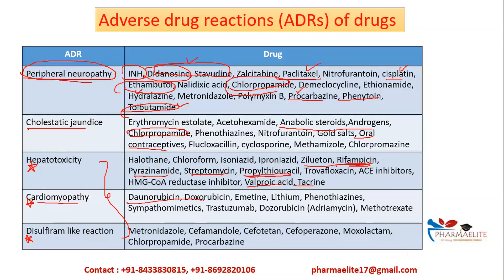Cardiomyopathy is a very classical feature of doxorubicin (also known as adriamycin). Methotrexate, lithium, and phenothiazines also cause cardiomyopathy. Disulfiram-like reactions occur with metronidazole, cefamandole, cefotetan, and chlorpropamide. Remember that chlorpropamide causes disulfiram-like reaction, cholestatic jaundice, and peripheral neuropathy. Grouping these together and relating them helps you memorize ADRs effectively.